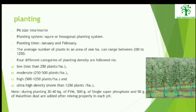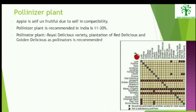Planting: The planting system is square or hexagonal. Planting time ranges between January to February. The average number of plants per hectare can range between 200 to 1250. Pollinizer plants are recommended in India at 11–30%, and include the Royal Delicious variety. Plantation of Red Delicious and Golden Delicious as pollinators is also recommended.